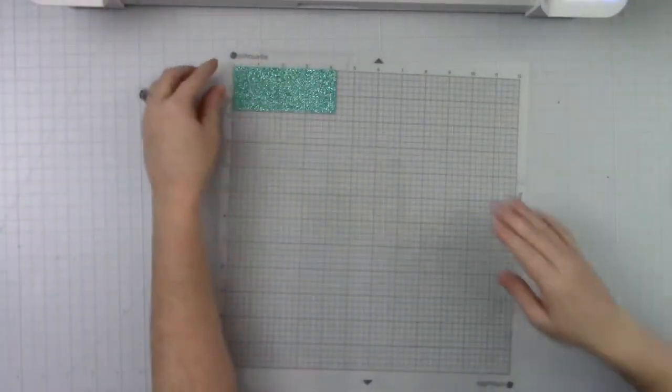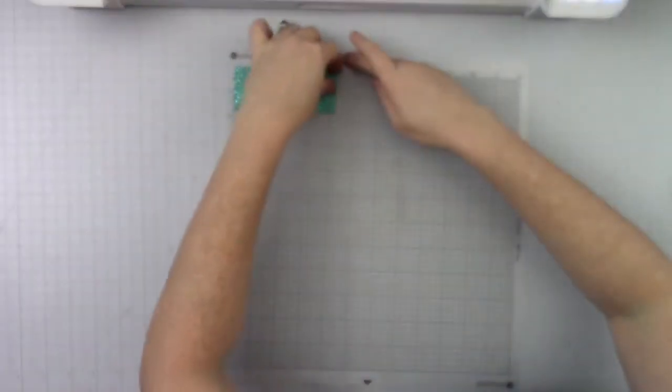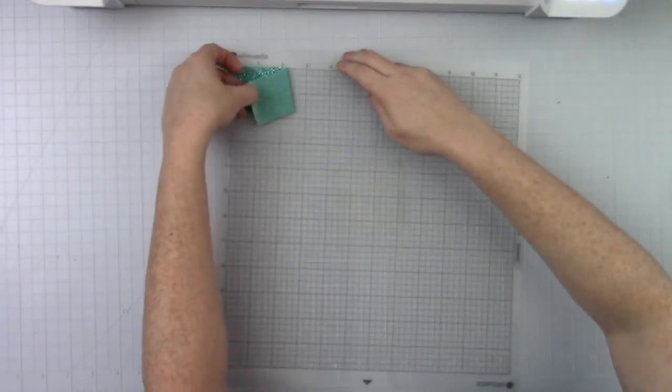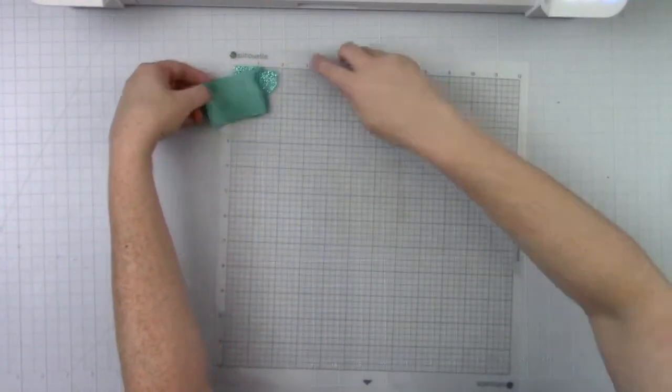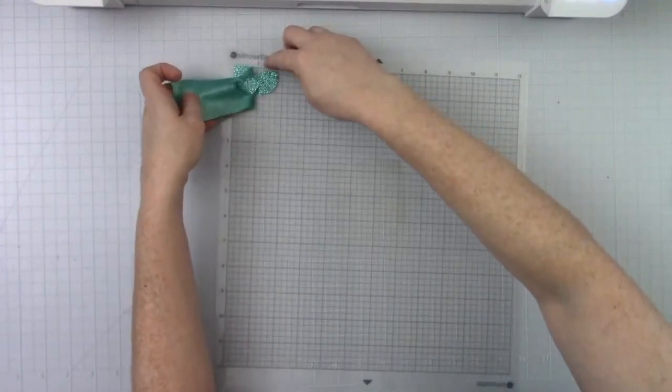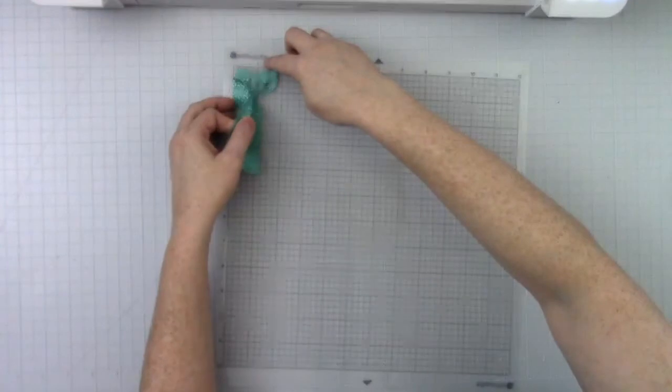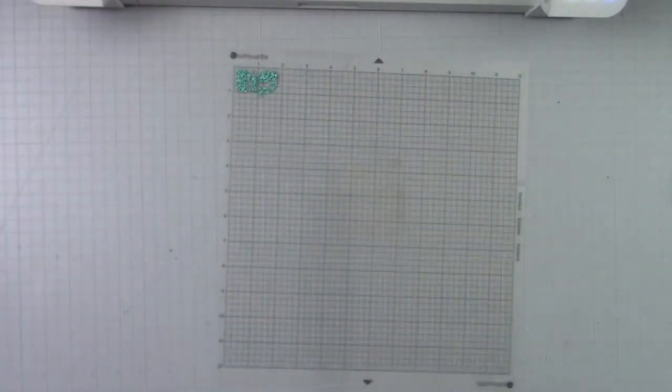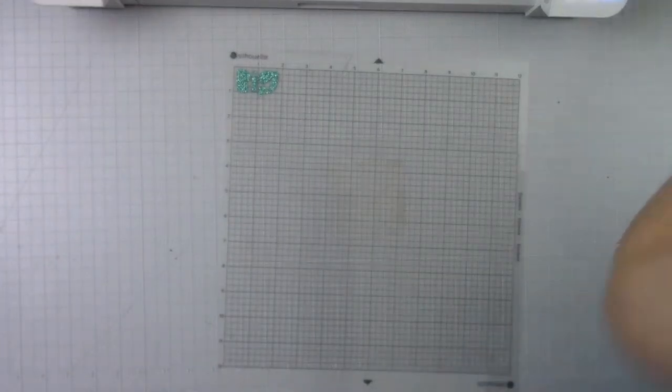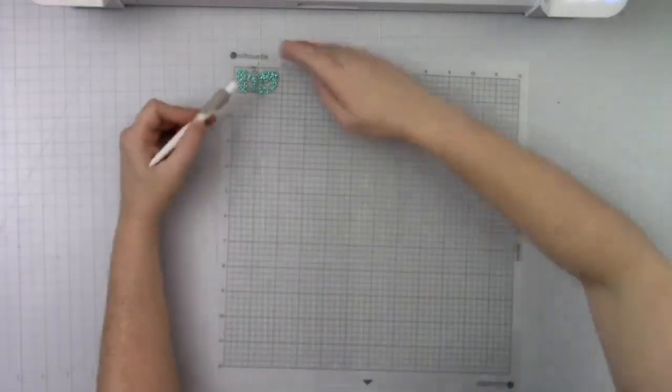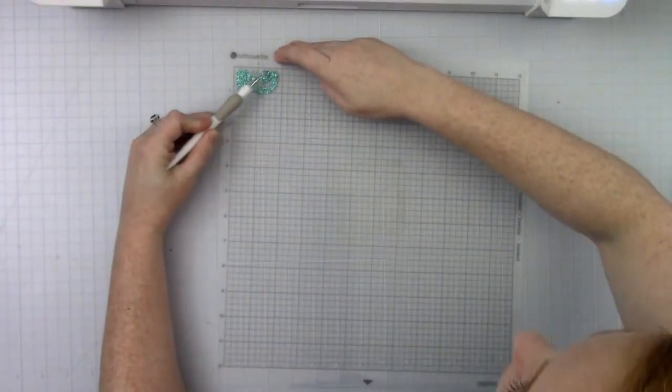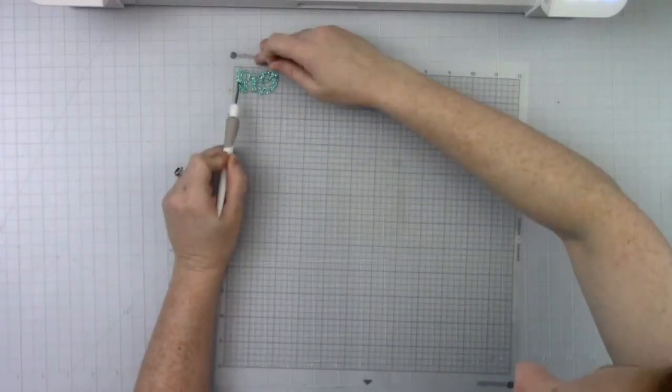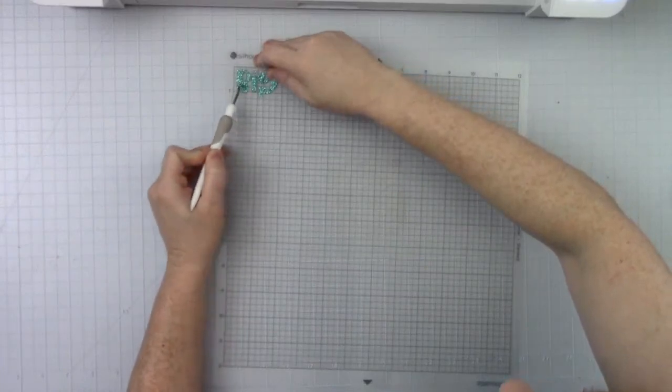And so now this is if you don't have the carrier sheet and it should actually just weed like normal, you know, you just pull it off like that. All right. Look at that. And then actually we want to pull the middle out too here. And here. Okay. All right.